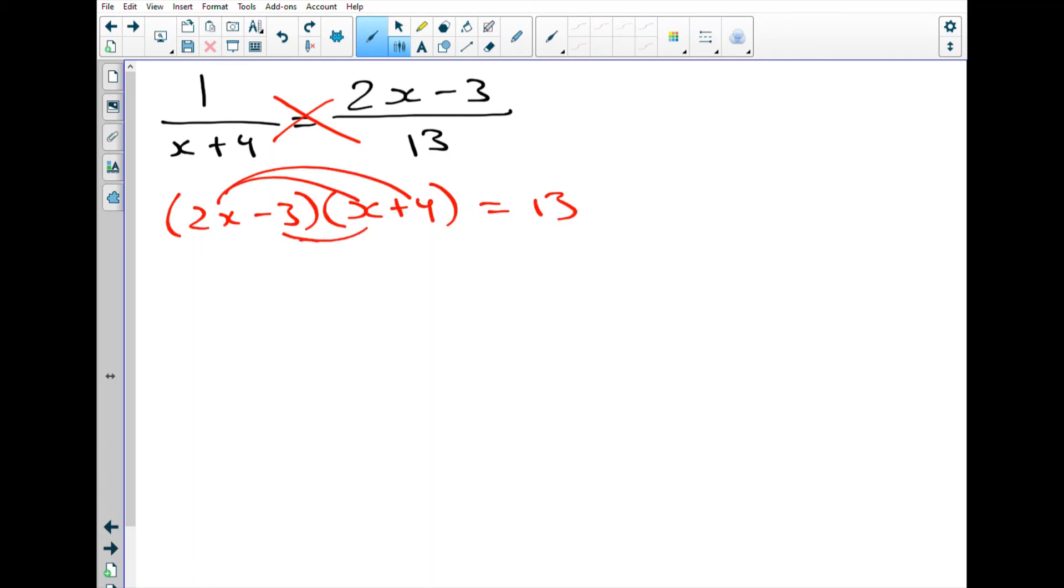So some double distribution here. We get 2x squared plus 8x and then negative 3x and negative 12. So bringing our 13 over so we can create a set equal to zero, as well as combining like terms. So that's positive 5x. And then, as mentioned, bring the 13 over. That'll give us negative, let's see, 25, I believe.